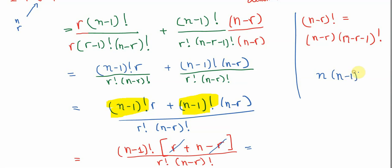n times n minus one factorial, which is just n factorial. So the r is canceled, we end up with n times n minus one factorial. So maybe I should write this one more time. So you have n minus one factorial times n,